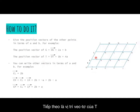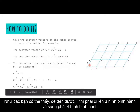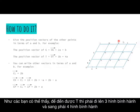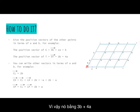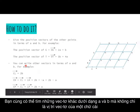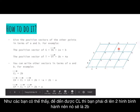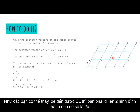The next one is the position vector of T. If you want to move from O to T, you have to go up three parallelograms and go to the right four parallelograms. So it's going to be 3b plus 4a, because OB is b and OA is a. You can also write other vectors in terms of a and b, not just position vectors. For example, CL: to move from C to L you have to go up two parallelograms, so CL equals 2b.